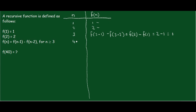For n = 4, that will be f(4-1) minus f(4-2), which gives us f(3) — which we know is 1 — minus f(2), which is 2. So f(4) = 1 minus 2 = negative 1.